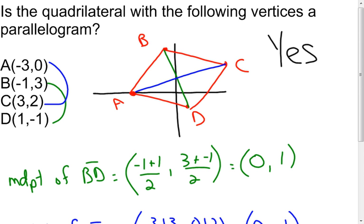Those are three ways of proving that a quadrilateral is actually a parallelogram on the coordinate grid. That concludes my examples dealing with tests for parallelograms. Thank you.